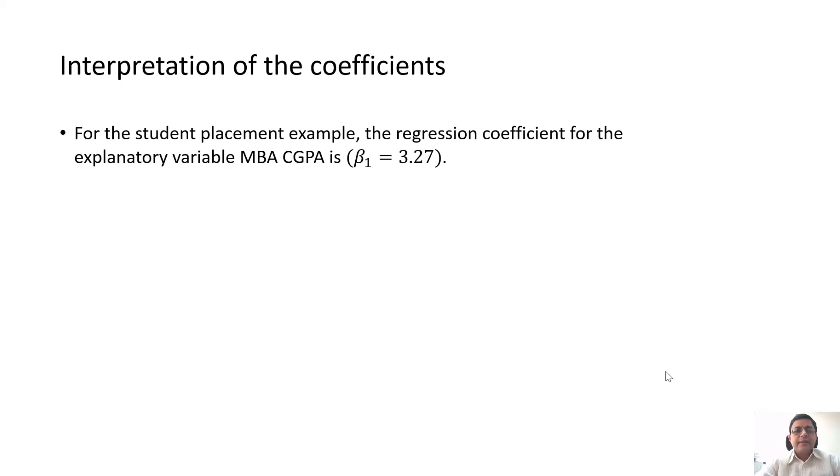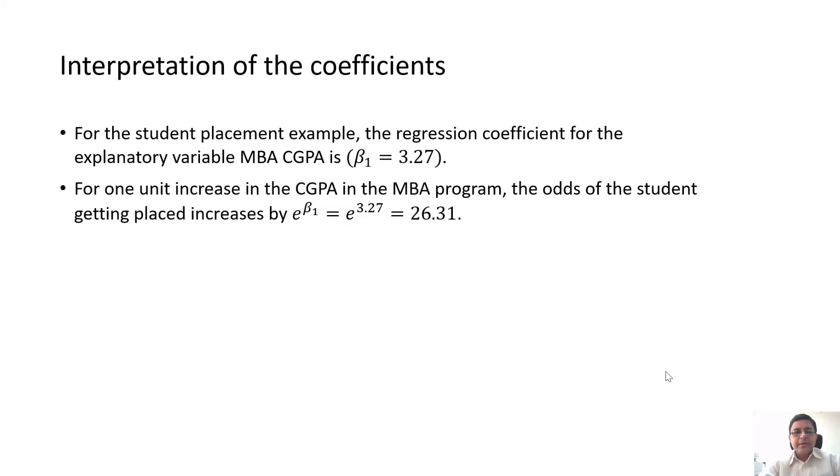For our example, the regression coefficient for the MBA CGPA was 3.27, beta 1 was 3.27. How do you interpret this 3.27? We say that one unit increase in CGPA of MBA student increases the odds of the student, odds not the probabilities, odds of the student getting placed increases by 26.31.